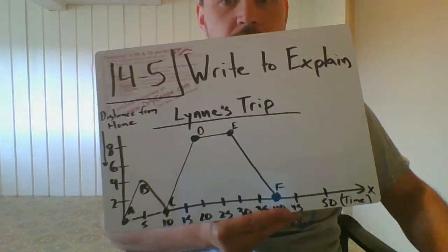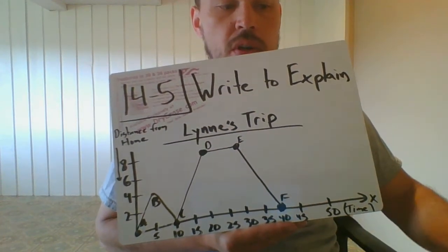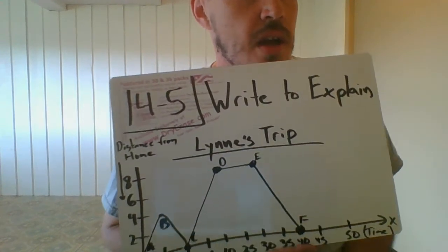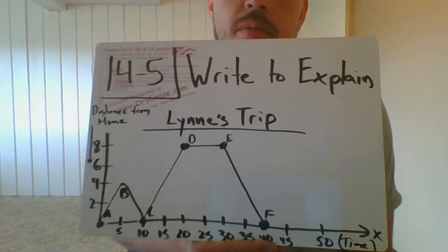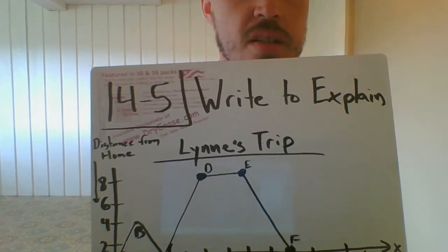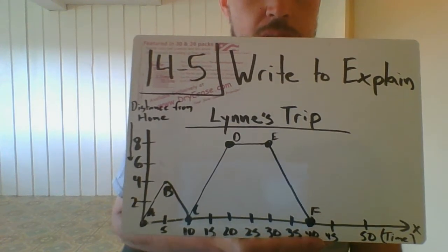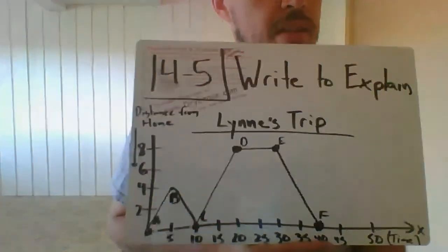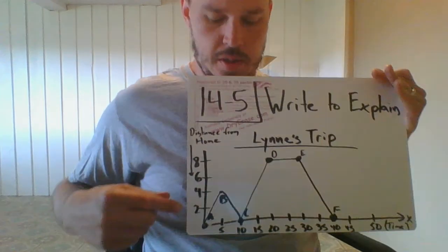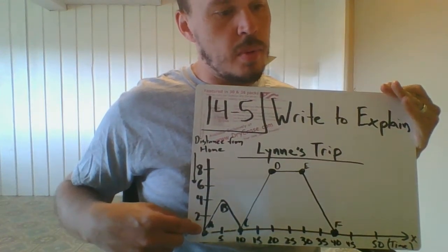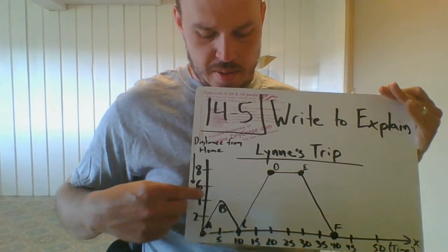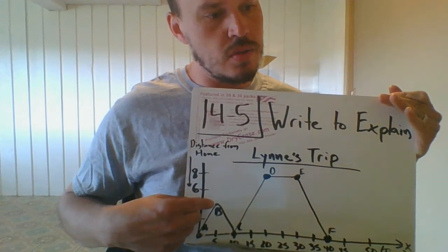Let's not worry about number six, but you're going to be asked to write or interpret stories from these graphs. I'm just going to read to you what the book wrote about this graph. Lynn leaves home at point A to go to the store. At point B she is halfway to the store, but realizes she had forgotten her wallet, so she goes back home to point C.